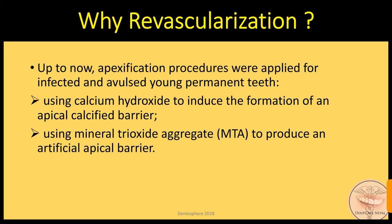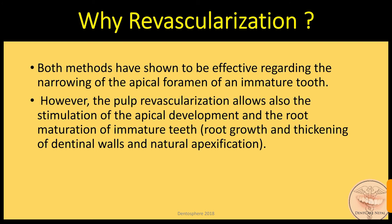Why should revascularization be preferred over conventional apexification? Up to now, apexification procedures were applied for infected immature permanent teeth, using calcium hydroxide to induce the formation of an apical barrier, or using mineral trioxide aggregate (MTA) to produce an artificial apical barrier. Both methods have been shown to be effective regarding the narrowing of the apical foramen of an immature tooth. However, pulp revascularization also allows stimulation of apical development and root maturation of immature teeth.